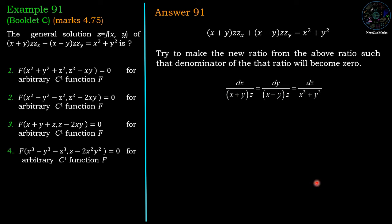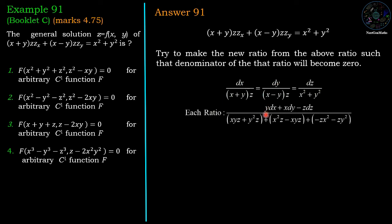Similarly, we find another ratio whose denominator is 0. Consider the combination y·dx + x·dy - z·dz. Multiplying the first ratio by y gives denominator xy·z + y²z.